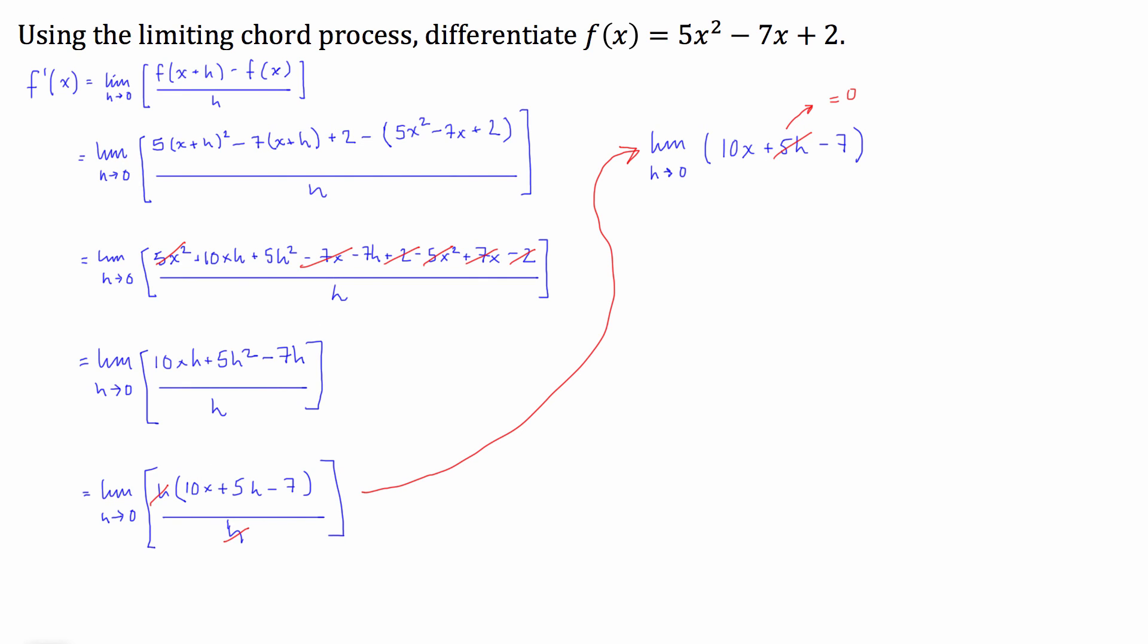So then what we have remaining is that we can just write, therefore, the function's derivative, f prime of x, is just equal to 10x minus 7. There you go. So that's finding the derivative of this quadratic using the limiting chord process.